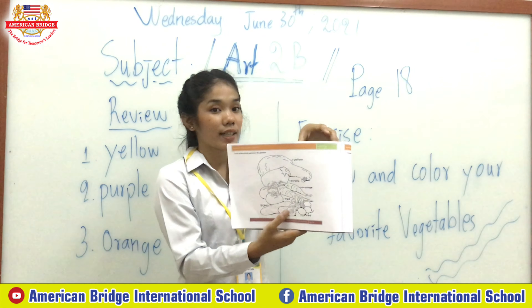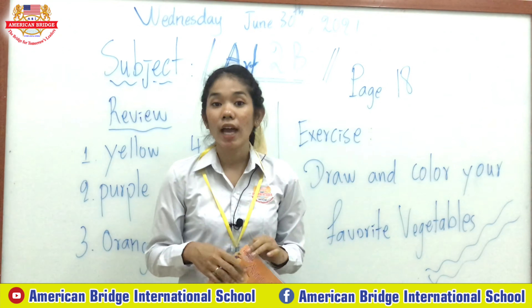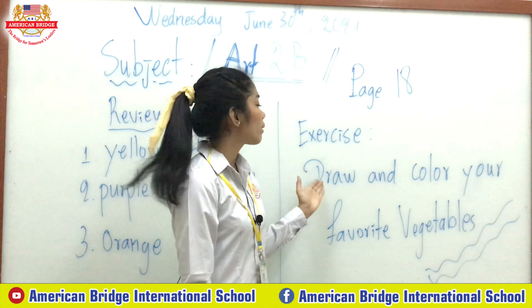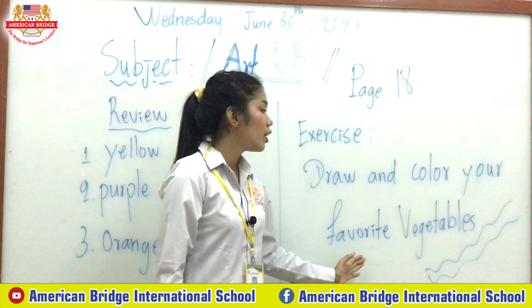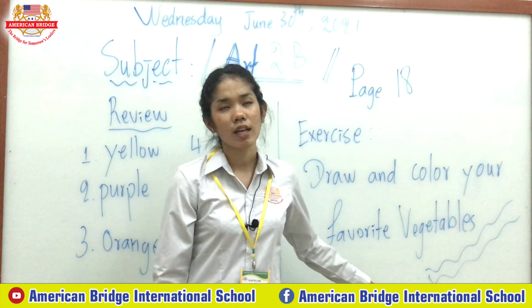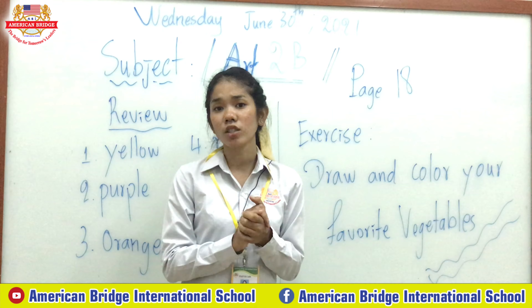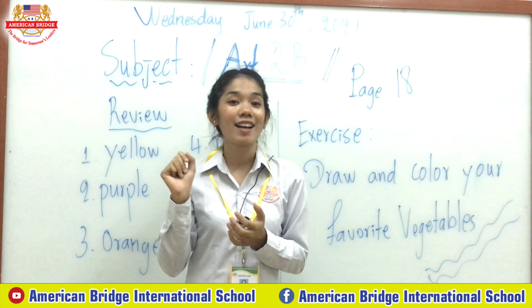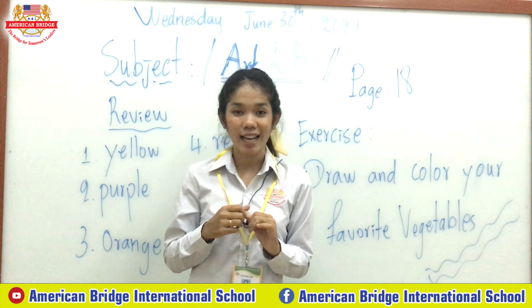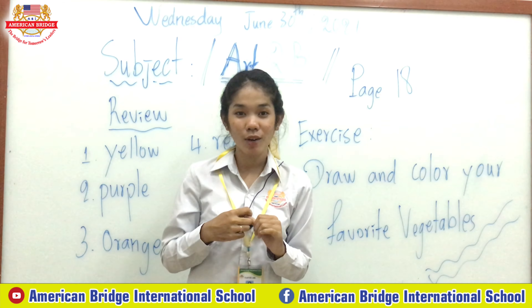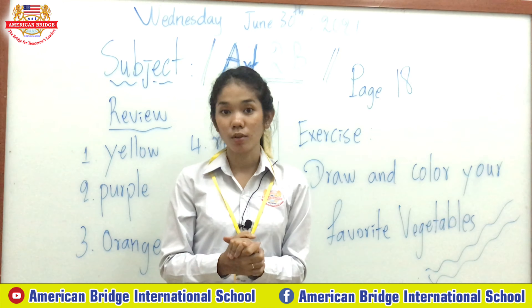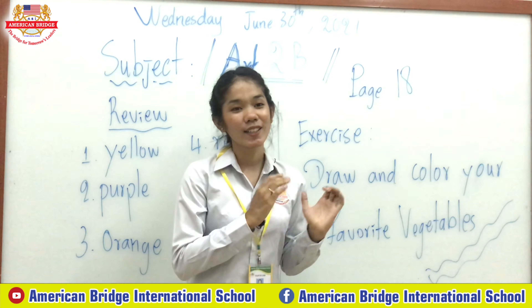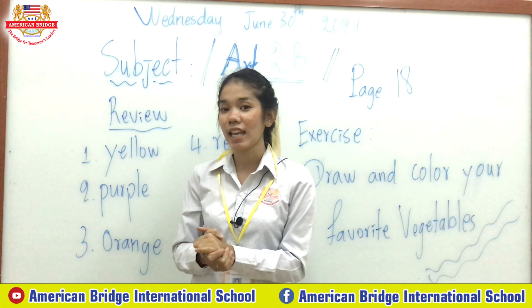When you finish coloring this picture, the teacher has an exercise for you. You have to draw and color your favorite vegetable. For example, if you like carrot, you can draw a carrot and color it. Do you understand? Draw some kind of vegetable that you like.